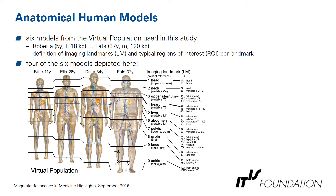The six models we used include four from the virtual population. They range from Roberta, a little girl, to Feds, an adult obese model. We defined 10 different imaging landmarks from head down to the feet and ankle, and for each landmark we also defined typical regions of interest used for the RF shimming optimization.